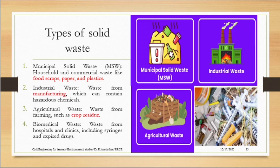Industrial waste is generated during any manufacturing process — from pen manufacturing to an aeroplane. From these kinds of manufacturing plants you get waste which is hazardous and chemical in nature. Industrial waste will mostly not be food or organic waste; industrial waste is purely hazardous and toxic.